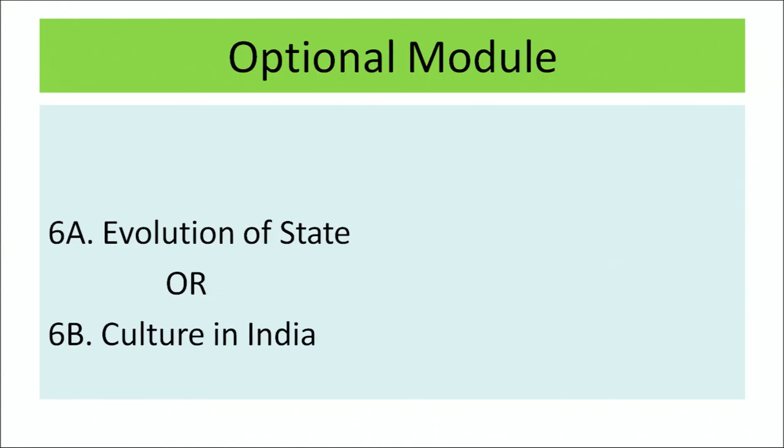The optional modules are 6A Evolution of State or 6B Culture in India. Let's have an overview of Module 1, that is Ancient India. This module gives an overview of the development of the historical process in India from prehistoric times to around 750 AD. It traces the social, political, economic, religious and cultural development in the ancient period.